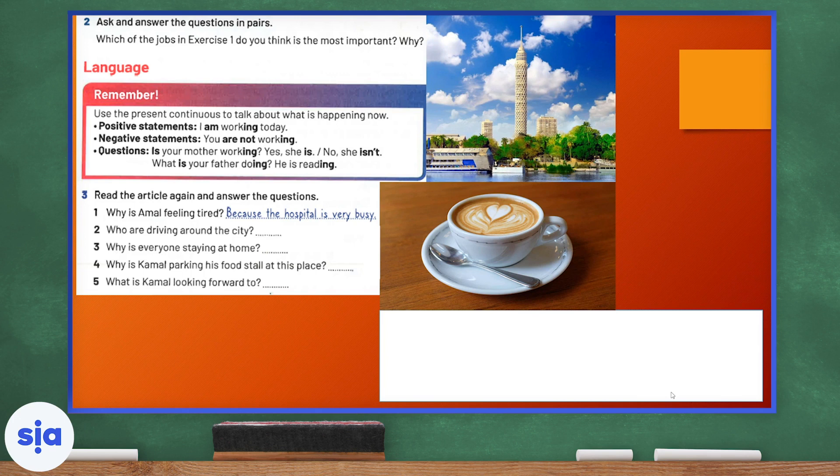Question. If you're asking the question, you can say, is your mother working? And then you can say, yes, she is, or no, she isn't. What is your father doing? He is reading. So, the present continuous verb tense includes am, are, is, plus the verb, plus ing. We can use it in the positive, showing something that is happening, or the negative, something that is not happening, or questions by starting with is or are.